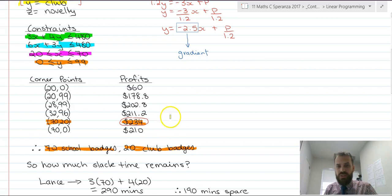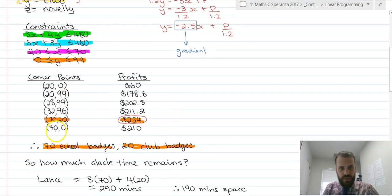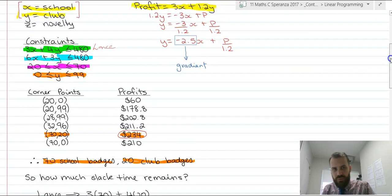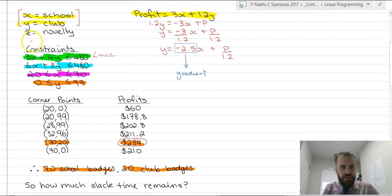So how much slack time is there? The first person who might have some slack time is Lance. We can remember that this constraint here was all about Lance. Lance takes three minutes to do each school badge and four minutes to do each club badge.